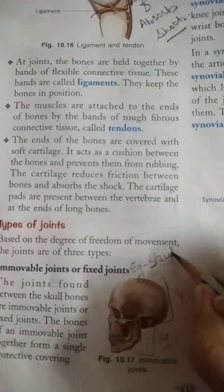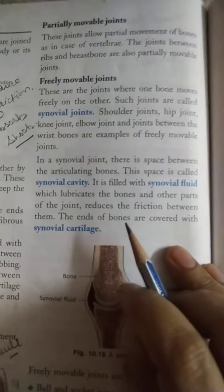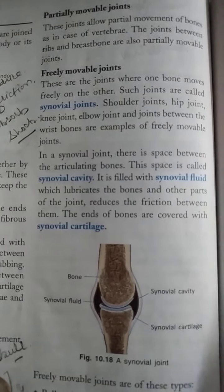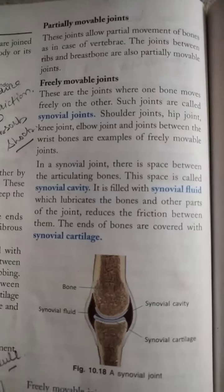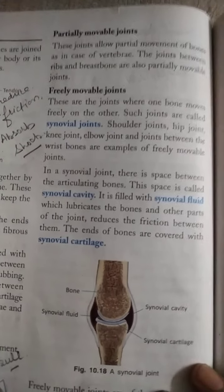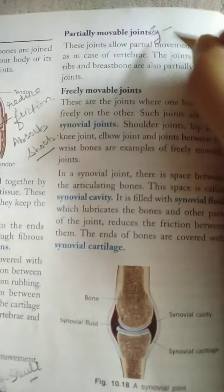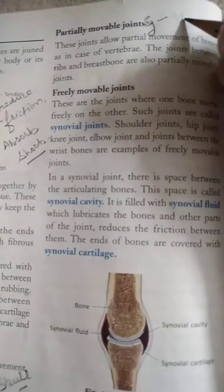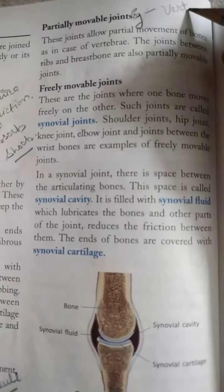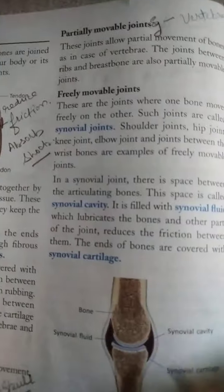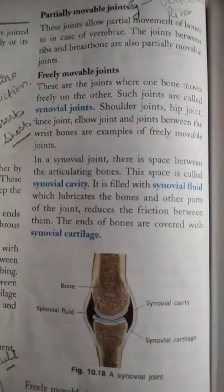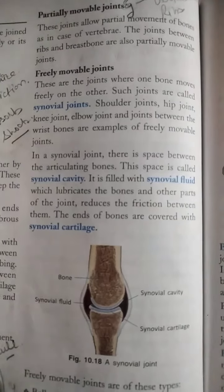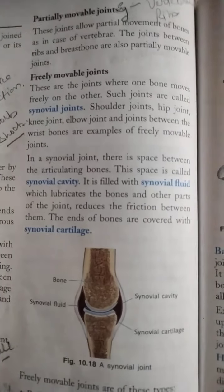Partially movable joints allow partial movement of the bones, as in the case of the vertebrae. The backbone can show a partial movement — meaning very little or very less movement. Examples of partially movable joints are the vertebrae, the ribs, and the breastbone or sternum, which show very little movement.